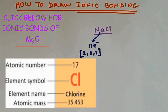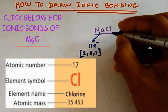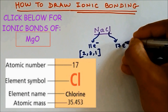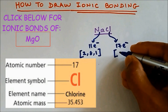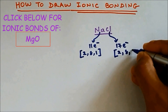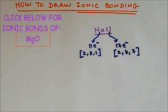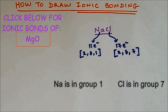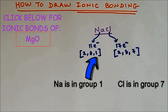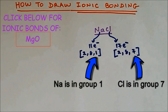If you do the same thing for chlorine, the number of electrons is 17, so the electron arrangement is 2,8,7. You can find the number of electrons in the outer shell without writing the electron arrangement, and that is done by looking at the group. Sodium is found in group 1, so it has one electron in the outer shell. Chlorine is found in group 7, so it has seven electrons in the outer shell.